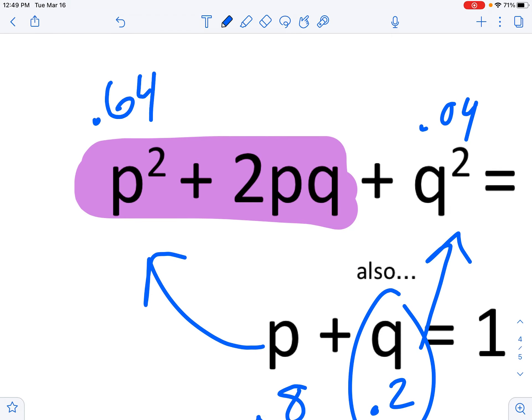And then so what's this? Well, 0.64 plus 0.04, and the difference from 1 is 0.32.